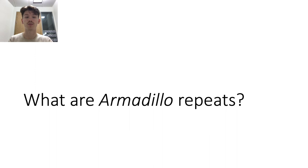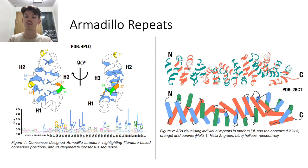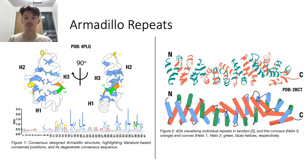Let's first introduce what armadillo repeats are. Armadillo repeats are 41 amino acids long and are defined by a characteristic and conserved 3-alpha helical structural fold, and this conserved fold has a degenerate consensus sequence as you can see below. Armadillo repeats are organized in tandem arrays that form a superhelical domain structure termed armadillo domains. At the bottom here, you'll see there's this inner groove or concave surface primarily contributed by helix 3 in orange, while helix 1 and 2 in green and blue respectively make up the convex surface.